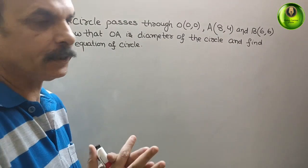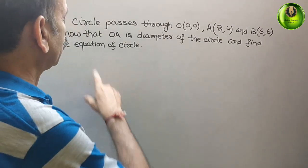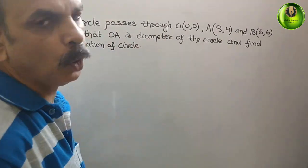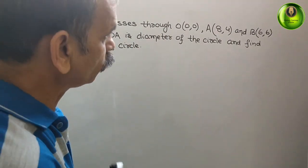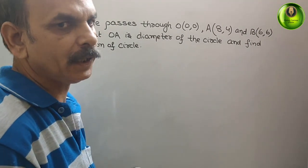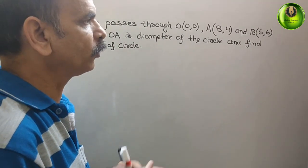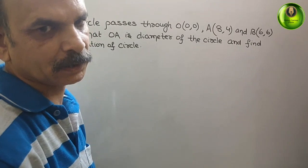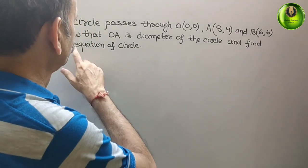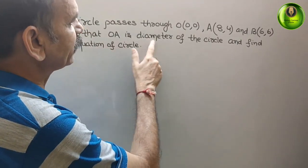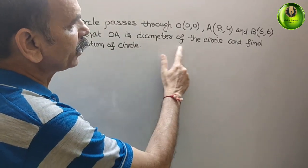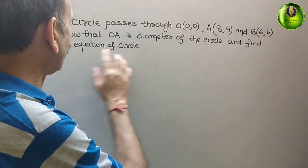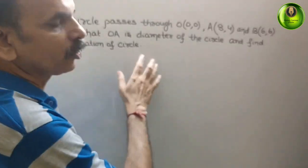Your question is: a circle passes through O(0,0), A(8,4) and B(6,6). Show that OA is a diameter of the circle and find the equation of the circle.